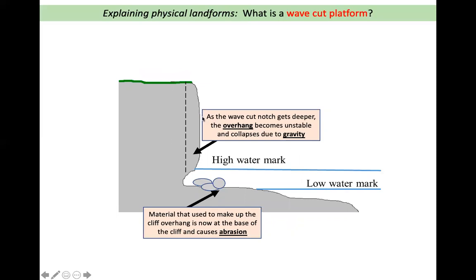As the wave-cut notch gets deeper, the overhang — the hanging-over part of the cliff — becomes unstable and collapses due to gravity. Material that used to make up the cliff overhang is now at the base of the cliff — pieces of cliff, rock, and pebbles that have fallen when the cliff collapsed. This causes abrasion: when the waves come up they pick up these pieces of rock and throw them at the cliff, causing the cliff to break. This is more erosion happening to make the wave-cut notch even deeper.